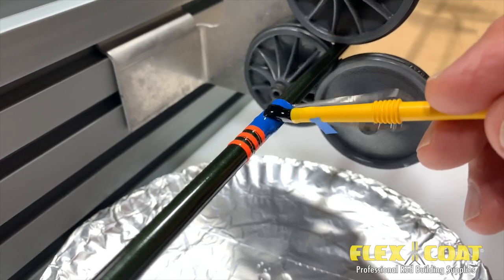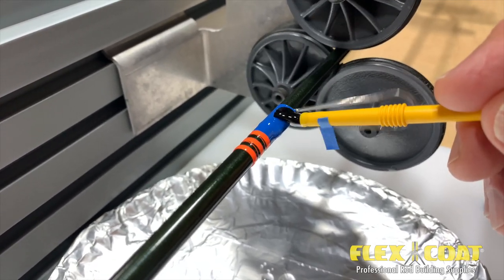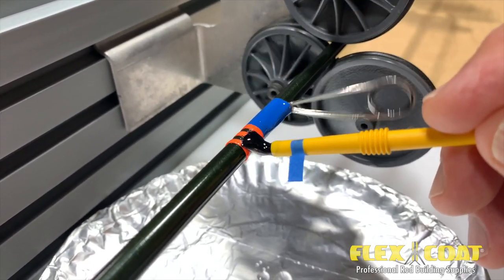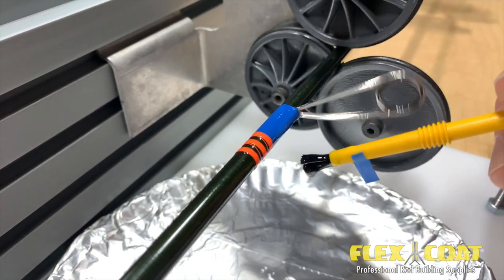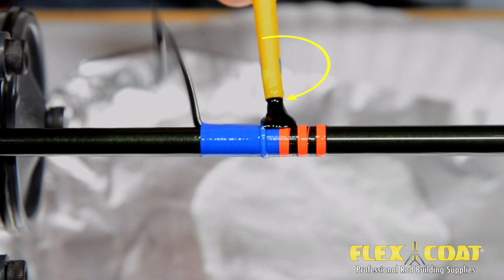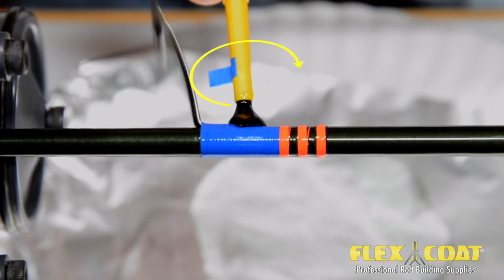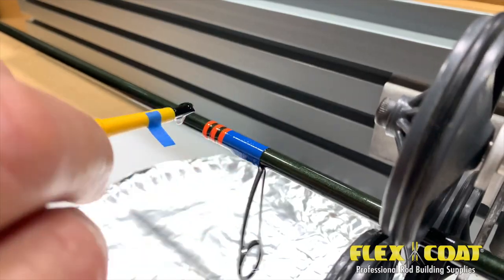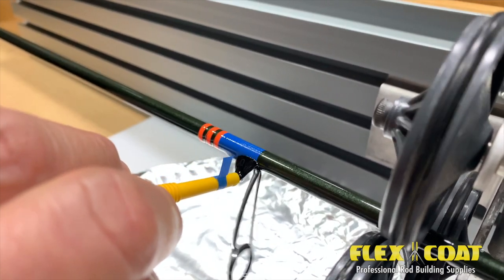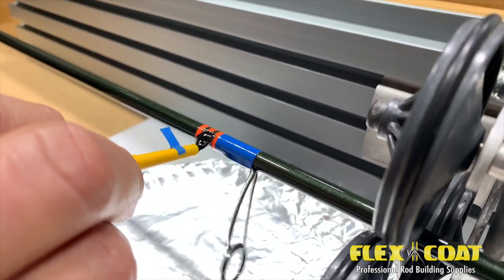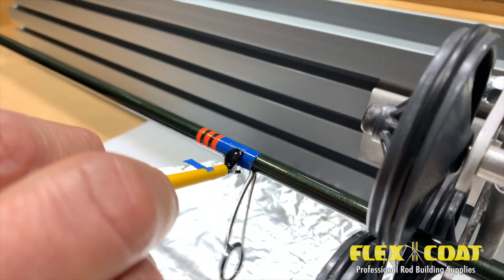Now, to get Flex Coat moving out toward the ends of the wraps, Roger uses a rotational method that you can see with the blue tape flag on his brush there. This rotation keeps the excess finish that is building up on the bottom of the brush, rotating and moving into the direction that he's moving or wants to move that finish.